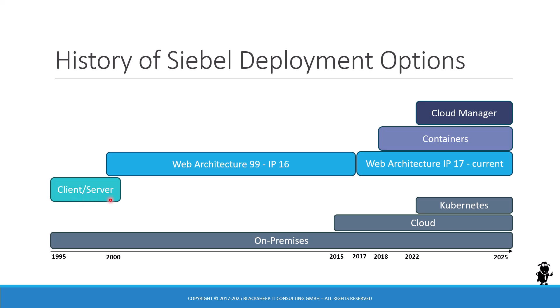In 1999–2000 the web architecture was built, as we knew it until IP 16, allowing us to evolve and get into Open UI and all that happens in the browser. With the shift to IP 17 in 2017 there was a significant shift towards a cloud-enabled architecture — and that coincides with the ability to deploy Siebel CRM in the cloud.